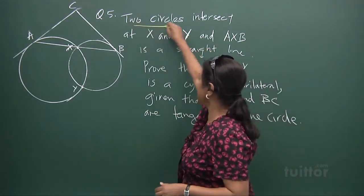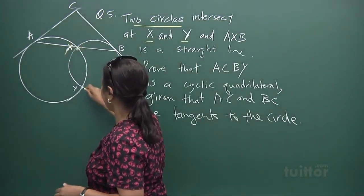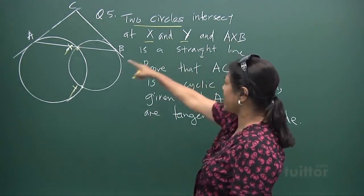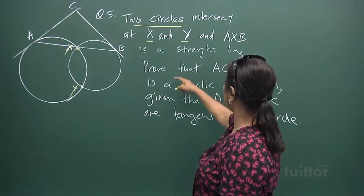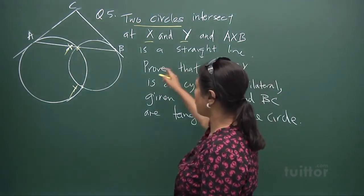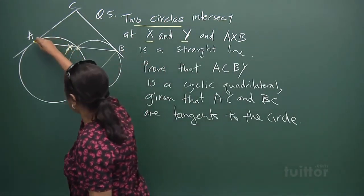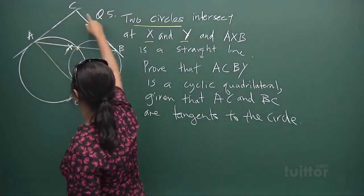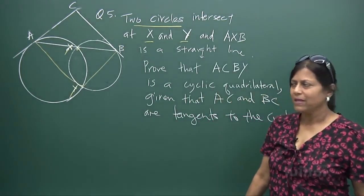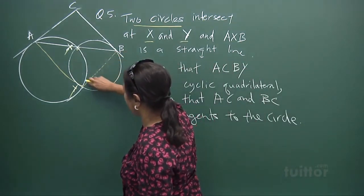You're given two circles that intersect at X and Y — that's your X and that's your Y. AXB is a straight line, and you have to prove that ACBY is a cyclic quadrilateral. It's not easy — you have to show it. I've drawn this line here; ACBY is a cyclic quad.